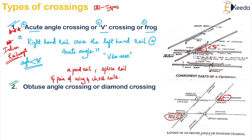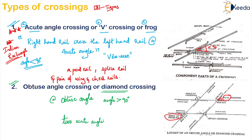The second type is your obtuse angle crossing, also called as diamond crossing because it will look in the form of a diamond. Here the right hand rail crosses the left hand rail at an angle greater than 90 degrees. It is also called as diamond crossing because the shape looks like a diamond. It mainly consists of two acute angle crossings and two obtuse angle crossings. If you observe, this is an obtuse angle crossing, and this is also an obtuse angle crossing. Here it is acute angle and here it is acute angle. This entire setup will be called as diamond crossing.